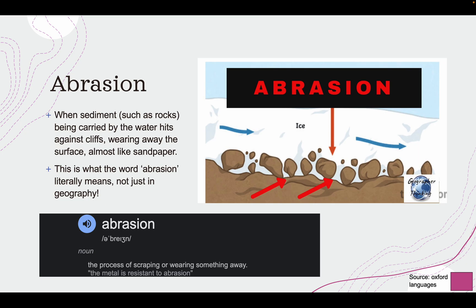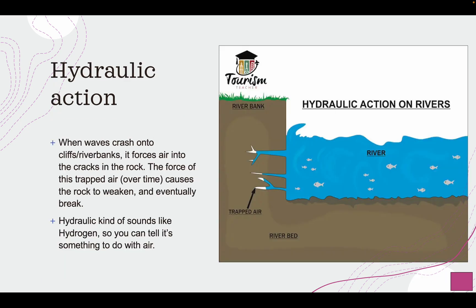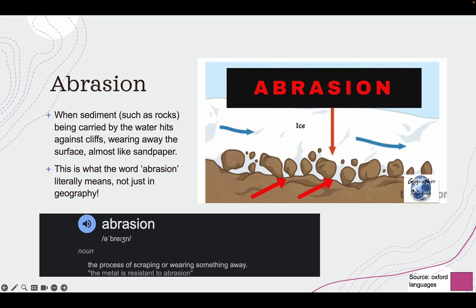Abrasion is when sediment, such as rocks, being carried by the water hits against the cliffs. These rocks — which could come from hydraulic action or just rocks falling into the river — roll along the riverbed and scrape the sides. It's kind of like sandpaper rubbing on plastic and wearing it down. The word abrasion literally means the process of scraping or wearing something away. These rocks scrape on the cliffs or riverbanks, wearing them down — that's another type of coastal erosion.